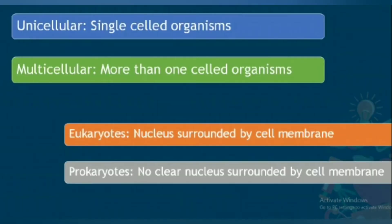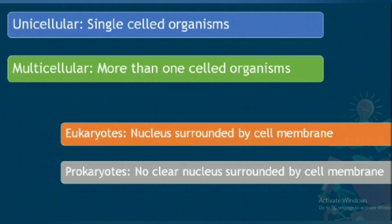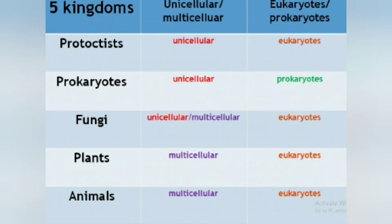In order to understand these five kingdoms, we have to understand these scientific terms. Unicellular means single-cell organisms. Multicellular means more than one cell organisms. Eukaryotes have a nucleus surrounded by a cell membrane. Prokaryotes have no clear nucleus surrounded by a cell membrane.